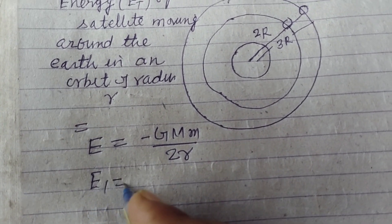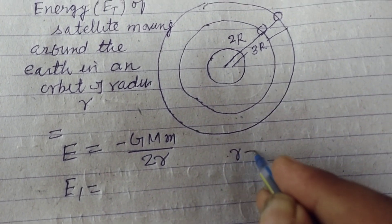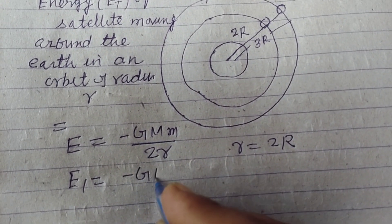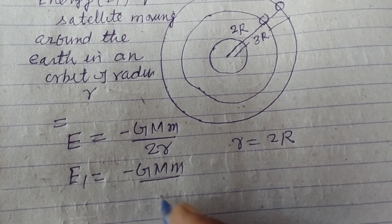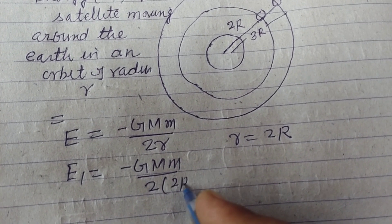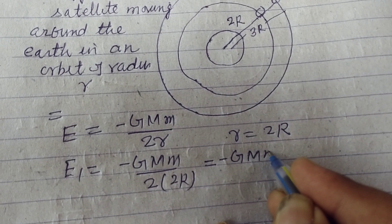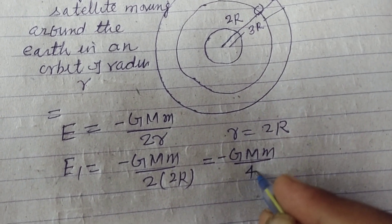So E1 is when R equal to 2R, minus GMm upon 2 into 2R, this is minus GMm upon 4R.